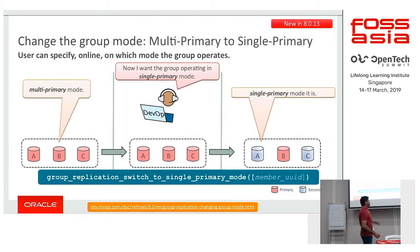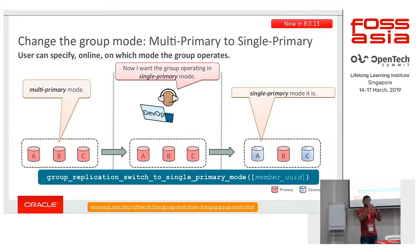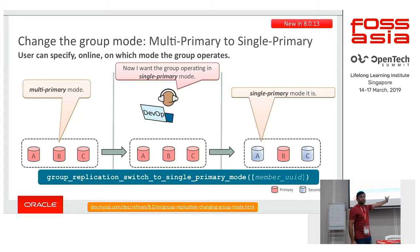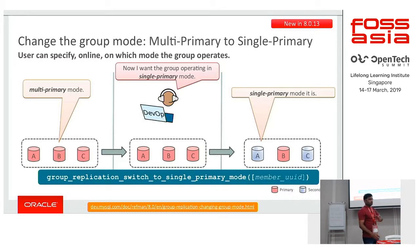Similarly, from multi-primary mode we can switch to single primary mode. Based on the lexicographical order of the server UUIDs, automatically the new primary will be elected if I don't pass a member UUID. But if I have members A, B, C and want B to become primary, I should pass the server UUID of B and then it will be elected as new primary. We can switch from multi-primary to single primary and everything is online — we do not have to take it offline.